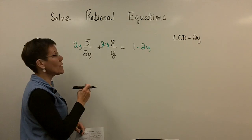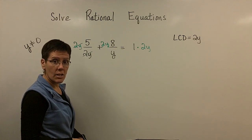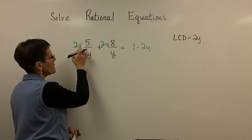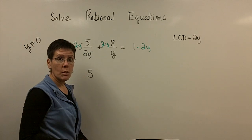And the reason we do this is because by multiplying by the LCDs, then we can clear the denominators. So right here, the 2y over 2y is equal to 1, and it leaves me with just the numerator of 5.